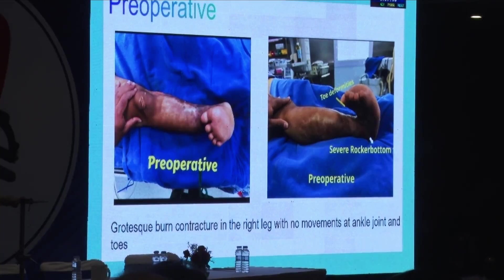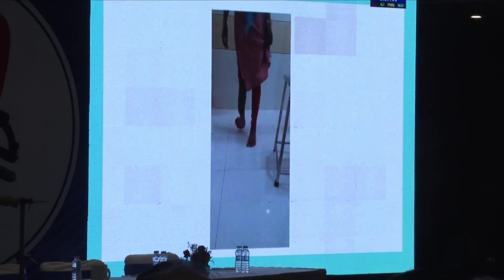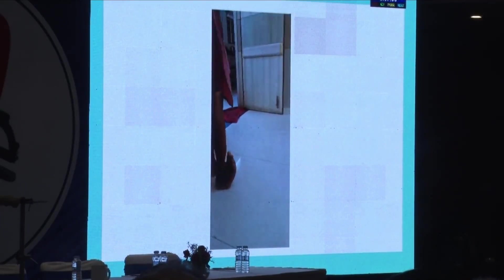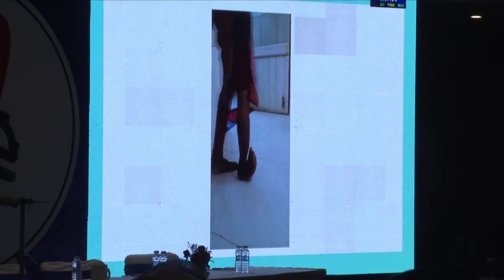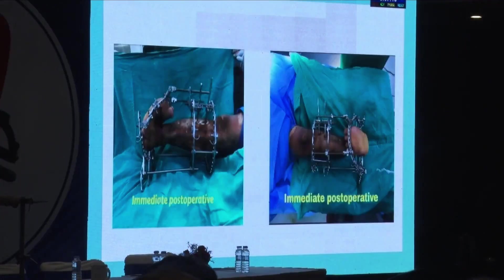There was a severe contracture of the foot, almost involving the anterior part. This is how she was ambulating. Radiologically, the ankle relationship was normal, but anterior to the talus there was a rocker bottom deformity. The challenging part of this case was the application of the frame.